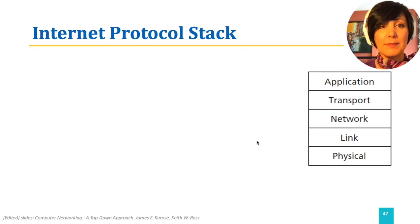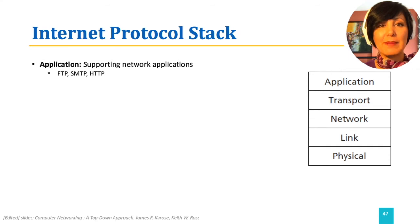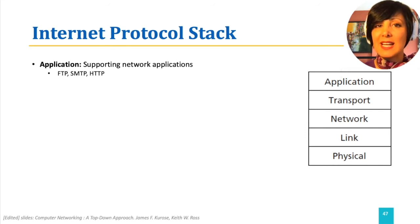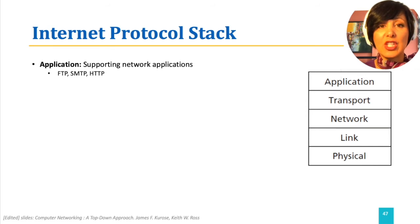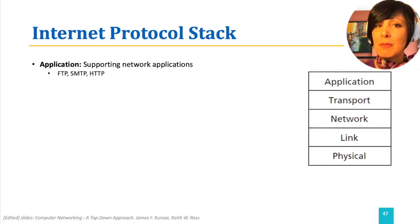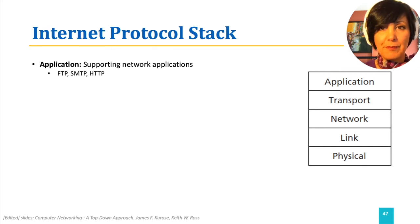Let's go from the top to the bottom. The Application layer provides the support for network applications. Email, web browsing, and file download are example network applications, and the Application layer defines, for example, SMTP, HTTP, and FTP protocols to provide them.